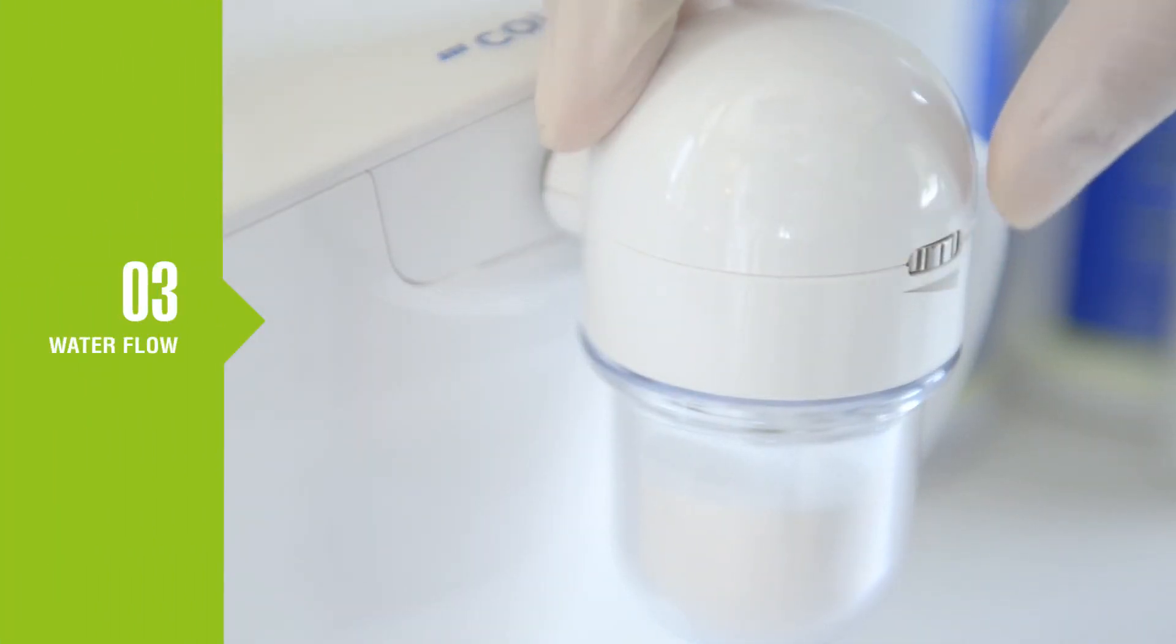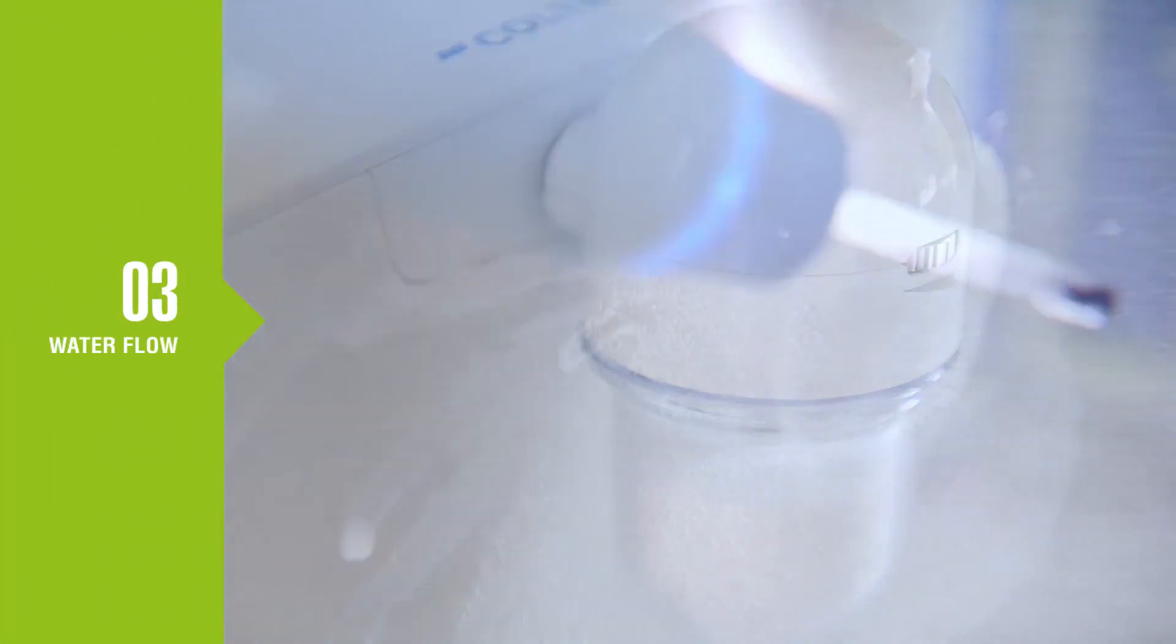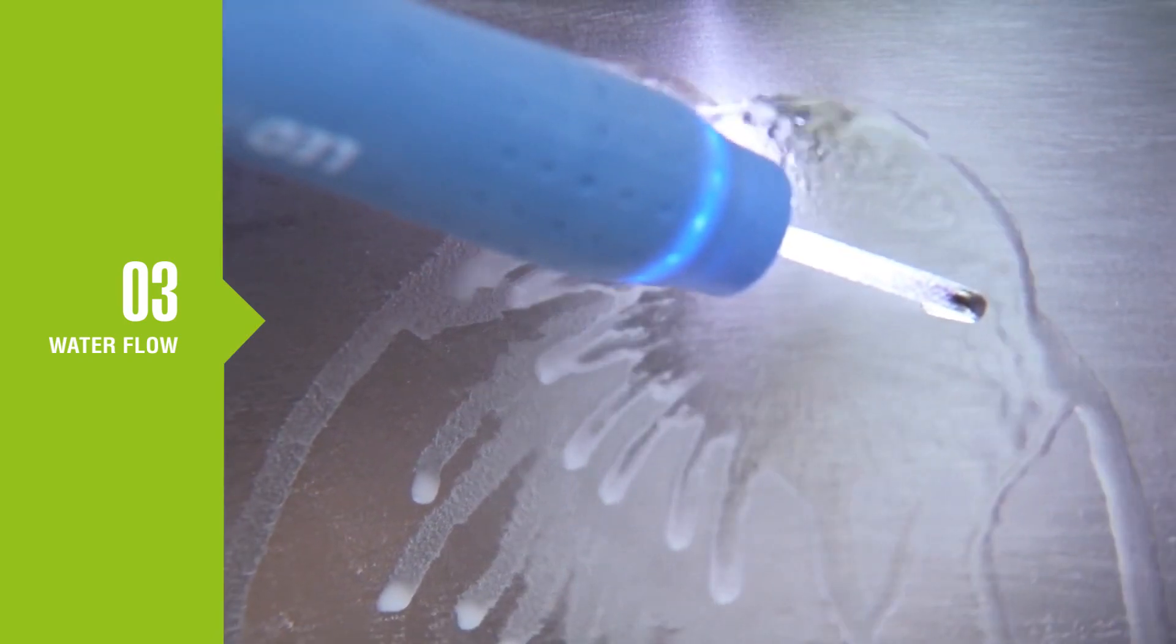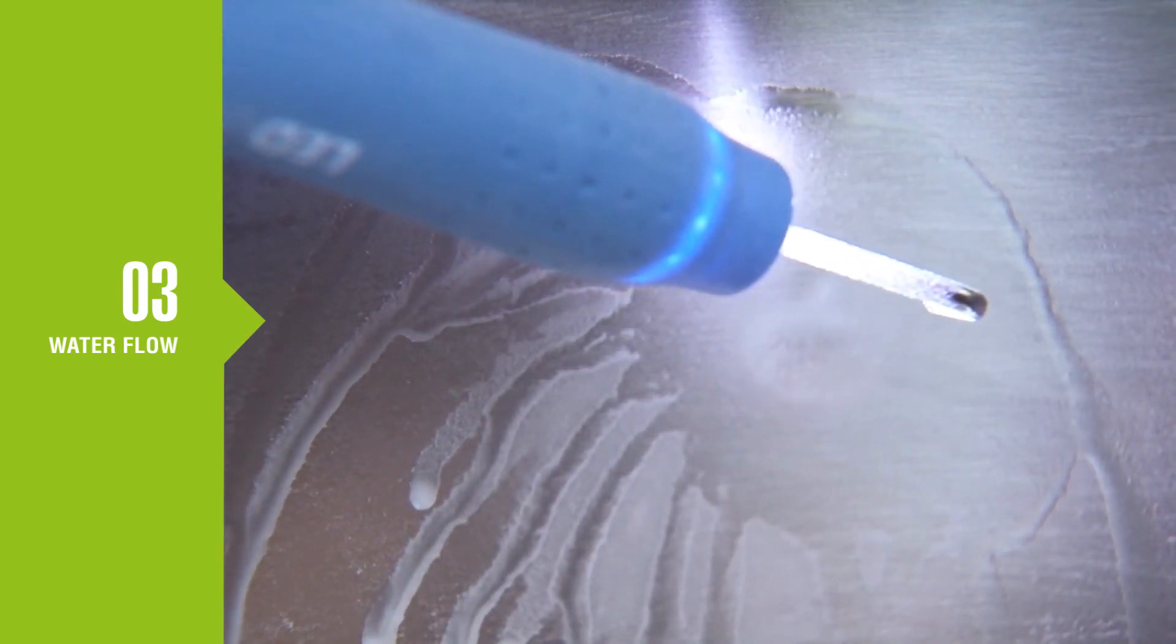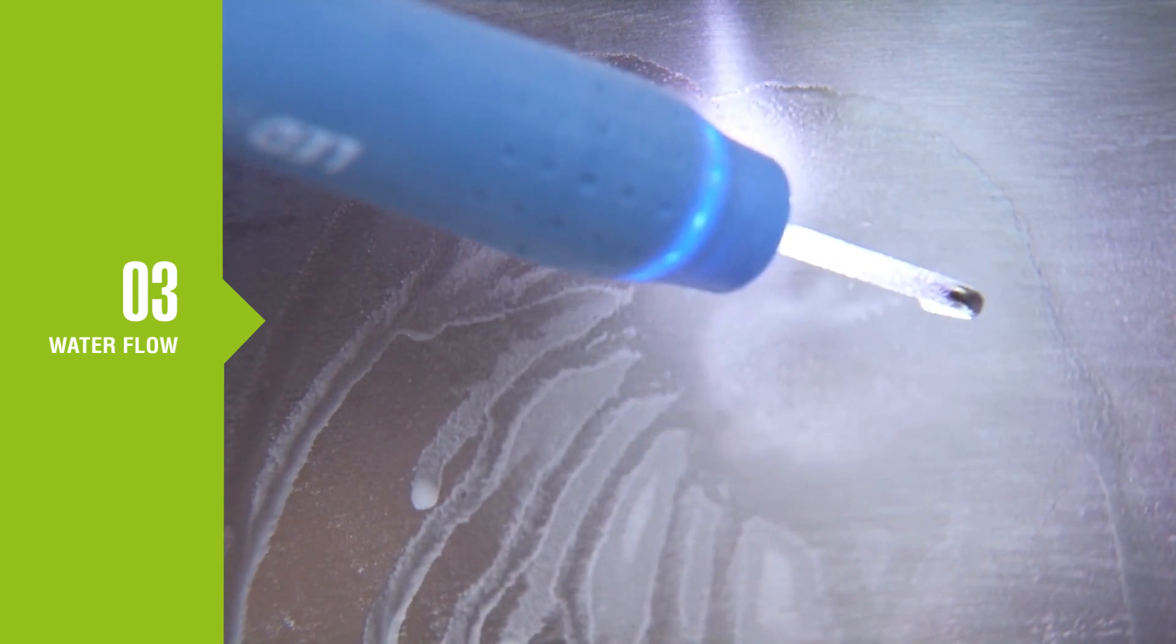Slowly reduce the powder flow with the thumb wheel on the powder cap until the powder starts to accumulate on the surface of the sink as a white spot. Then, increase the water flow until the spot disappears.